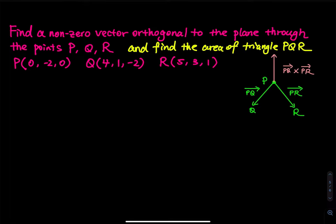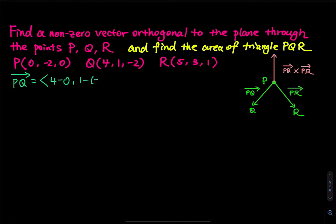So first of all, I have to find this orthogonal vector. To do so, I have to find the components for PQ and PR first. Vector PQ: that would be 4 minus 0, then 1 minus negative 2, and then negative 2 minus 0. So that equals 4, 3, and negative 2.